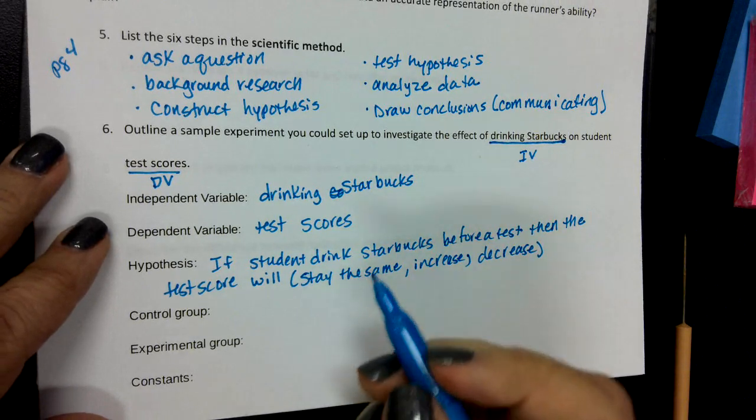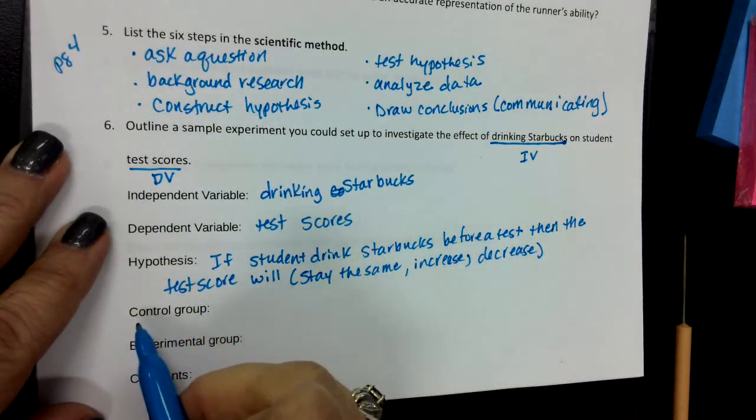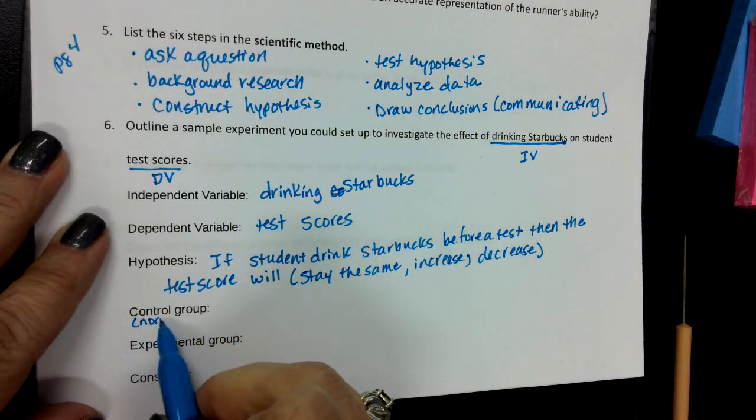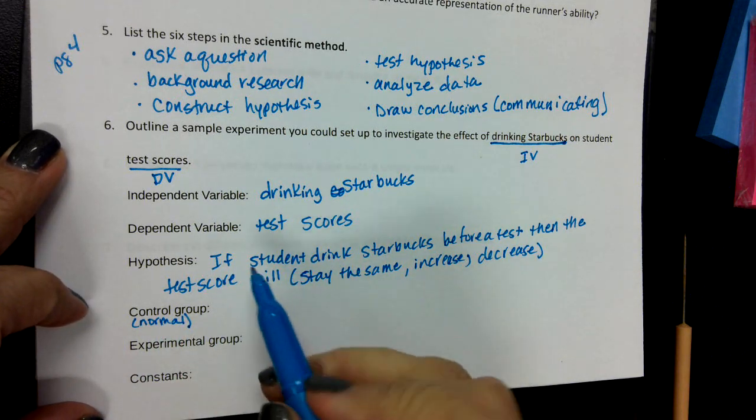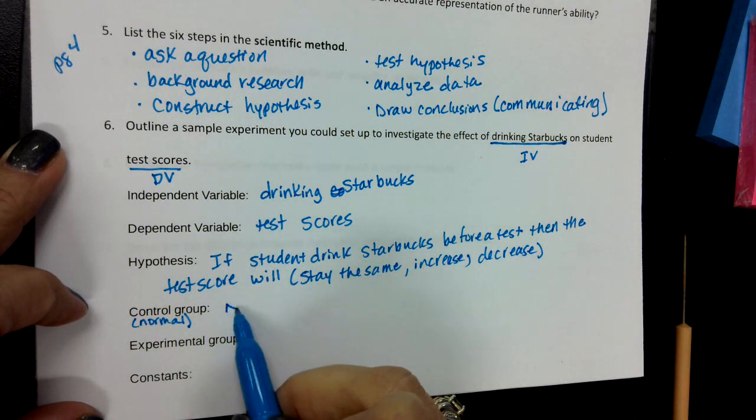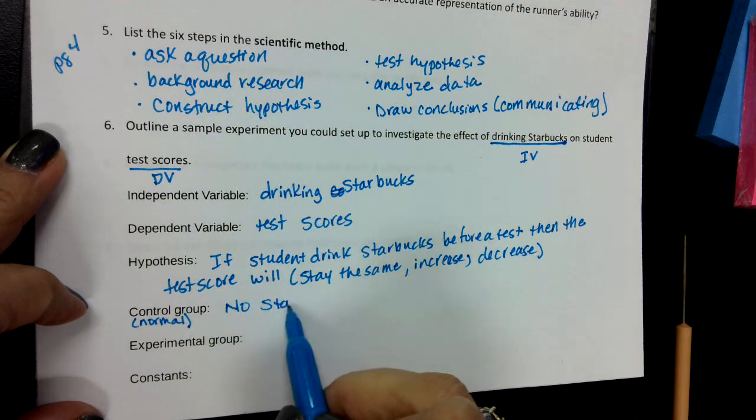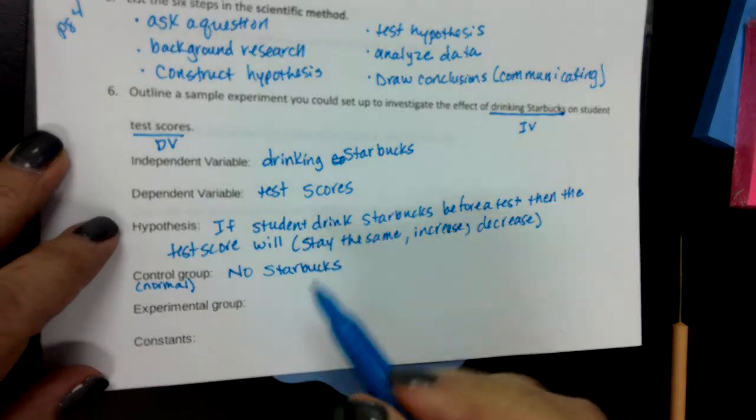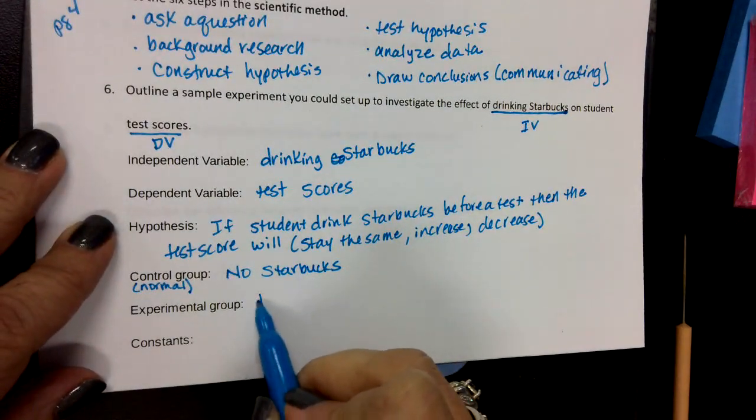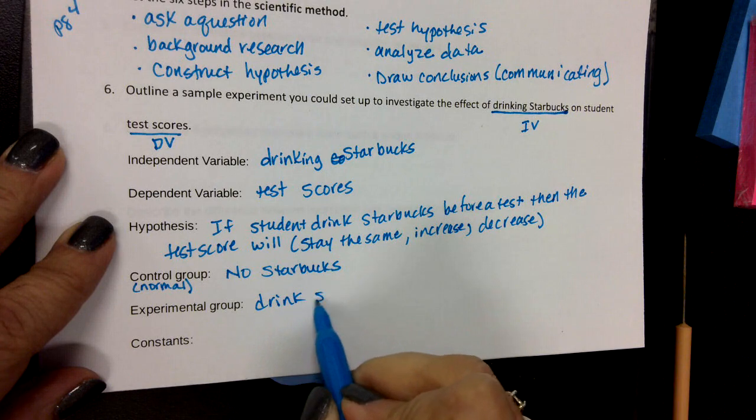So a control group is your normal. So I'm going to put in parentheses normal. So this would be a group that did not get Starbucks. So no Starbucks. Experimental group is the group that drinks Starbucks.